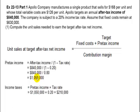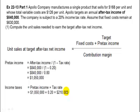You can check yourself by going to the second step. Take the pre-tax income of $1,050,000 and multiply it by the tax rate of 20%, and you get income taxes of $210,000. Then $1,050,000 minus $210,000 should give you an after-tax income of $840,000 — and it does.